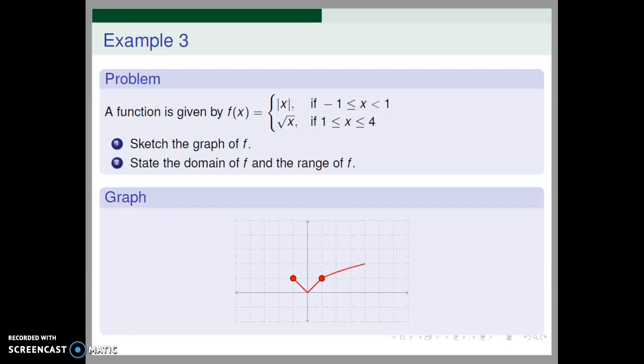For x values between 1 and 4, we use the square root function. We include the point (4, square root of 4), or (4, 2), and this is the entire graph of the function y = f(x).